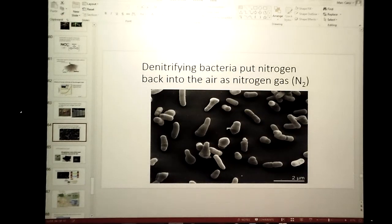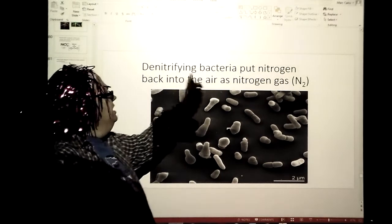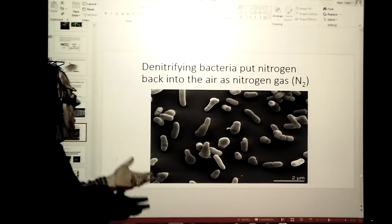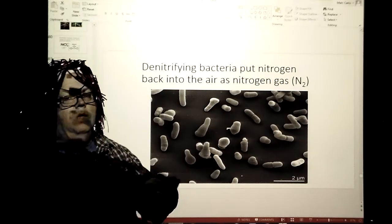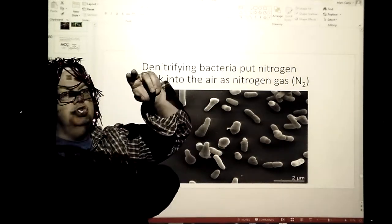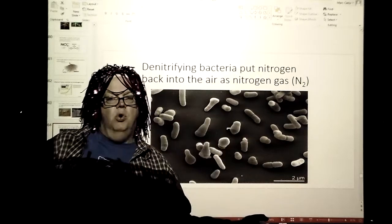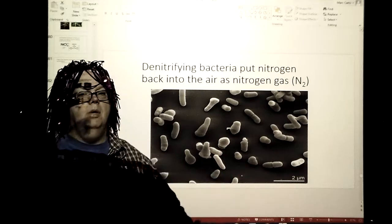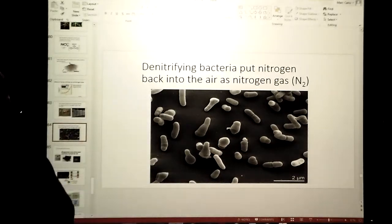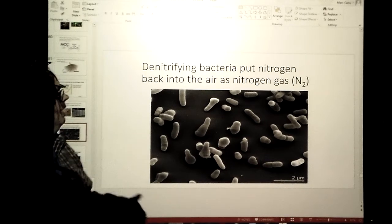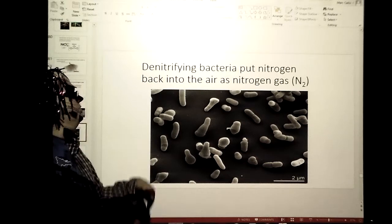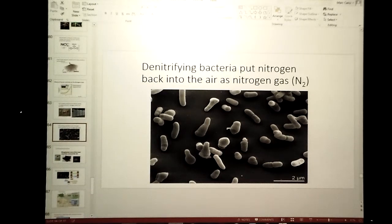You have denitrifying bacteria that are going to put the nitrogen back into the air in the form of natural nitrogen gas, and that's where the cycle ends. When we started out as N2 in the atmosphere, it gets absorbed into the soil and then you end up being changed into ammonia, ammonium. Then of course it ends up being picked up, it becomes part of the plant material, and then once that happens you got the denitrifying bacteria that will put it back into the air.